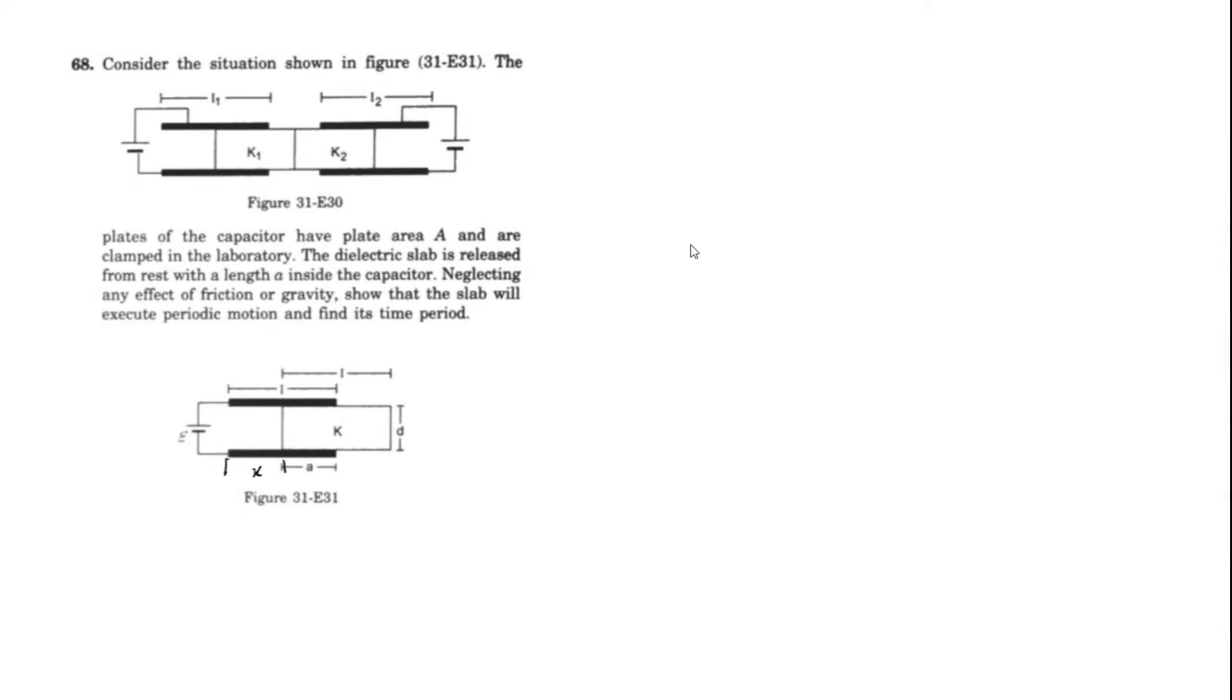So this problem is probably from the capacitors chapter. And ignore this image here because they want 31-31, which is this one. But anyways, consider the setup shown in figure 31-E31. The plates of the capacitor have plate area A and are clamped in the laboratory. Dielectric slab is released from rest with a length A inside the capacitor. Neglecting any effective friction or gravity, so this slab will execute periodic motion and find its time period.